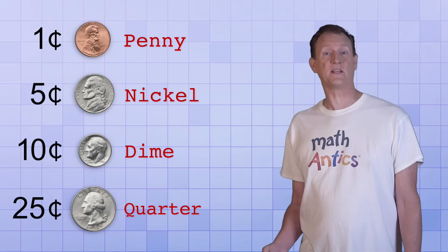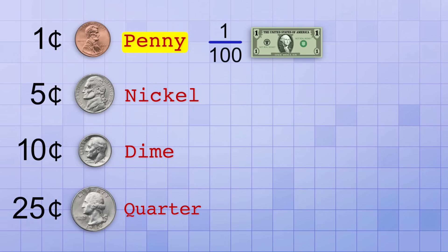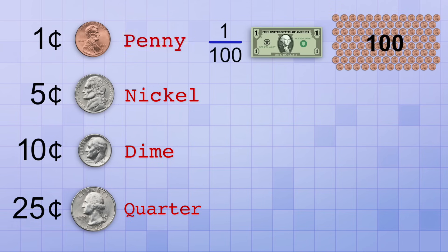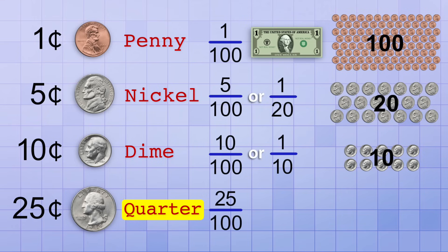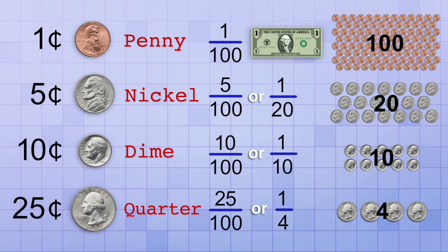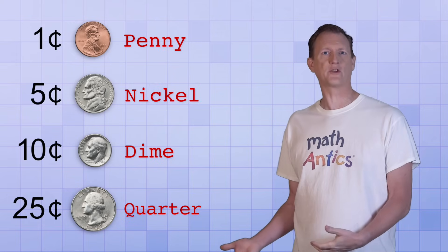Each coin represents a different fraction of a dollar. A penny represents one one-hundredth of a dollar, so you'd need one hundred pennies to equal one dollar. A nickel represents five hundredths of a dollar, which is the same as one-twentieth, so you'd need twenty nickels to equal one dollar. A dime represents ten hundredths of a dollar, which is the same as one-tenth, so you'd only need ten dimes. And a quarter represents twenty-five hundredths of a dollar, which is the same as one-fourth — hence the name quarter, as in one-quarter of a dollar — so you'd only need four quarters to equal one dollar.